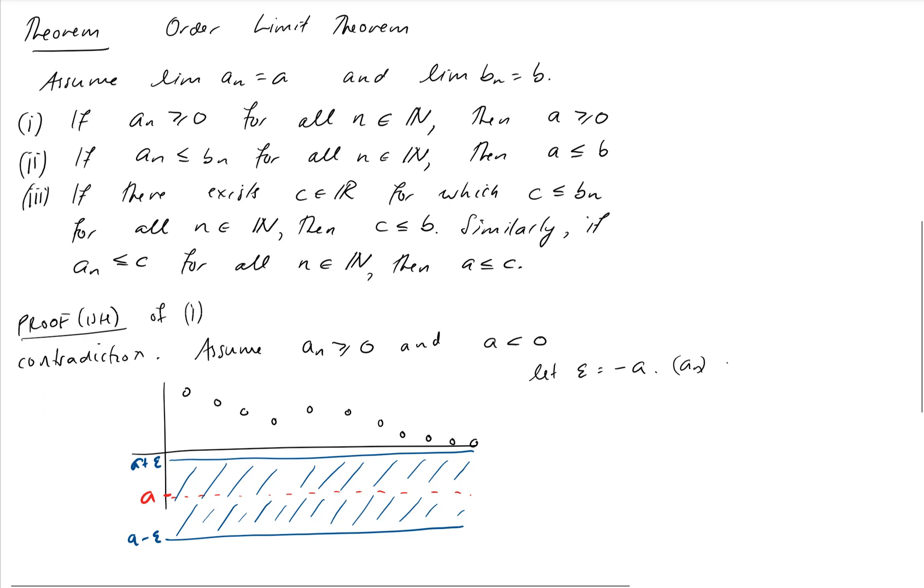A_N converges so there exists N such that absolute value of A_N minus our candidate limit, which is A, is less than my epsilon negative A for N greater than or equal to our N. In particular, this means that A_N is going to be less than 0. And that directly contradicts this statement here.